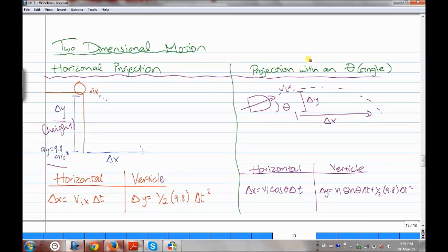Now let's go on to the projection with an angle. Let's say a man is shooting with a bow and arrow, and this is the VIX, which the arrow travels through in the air and then falls on the ground. So this would be the delta X and the height through which the arrow is flying is delta Y.